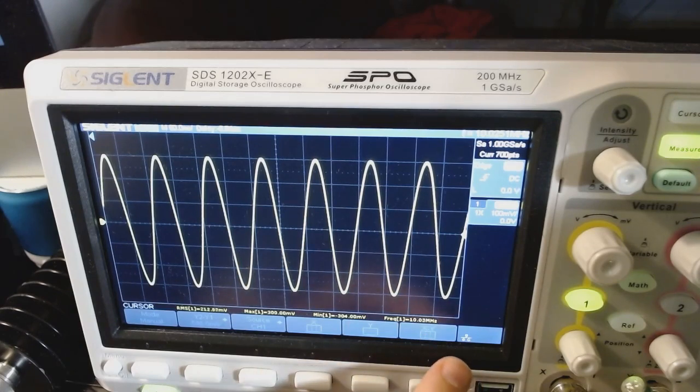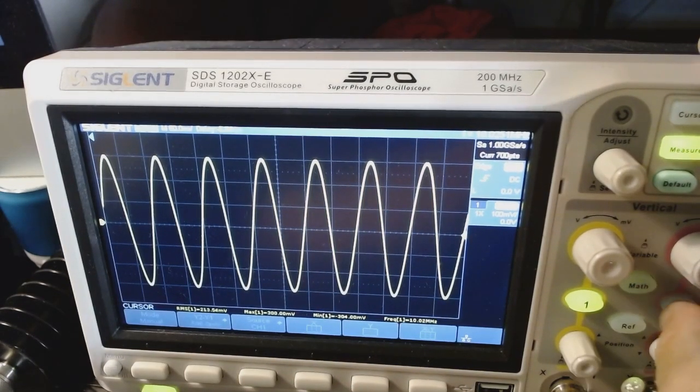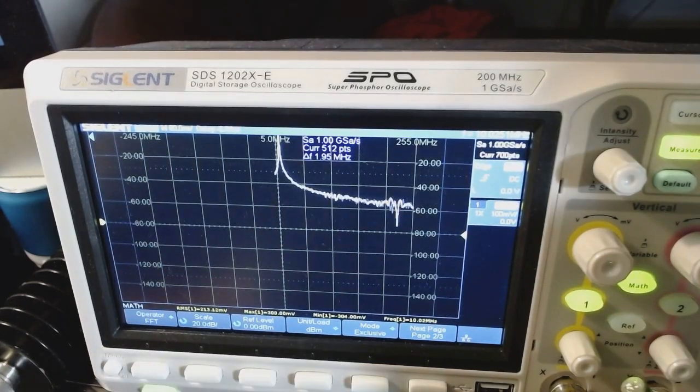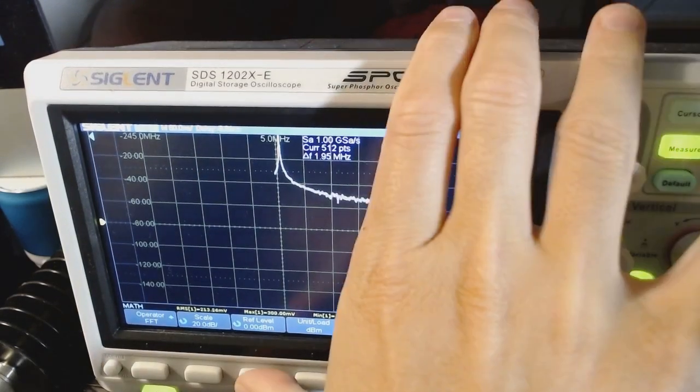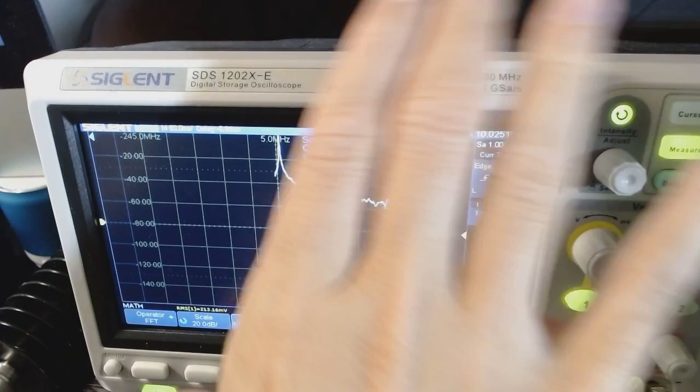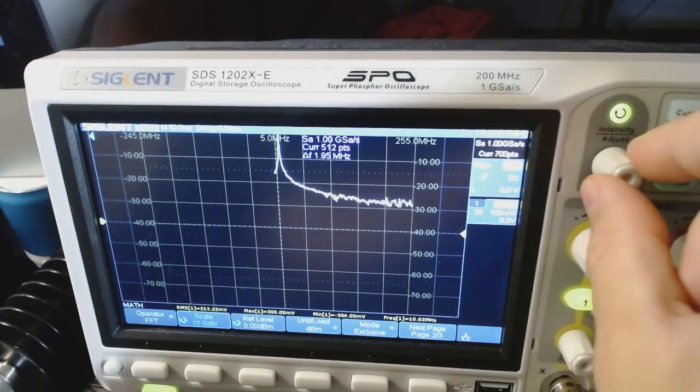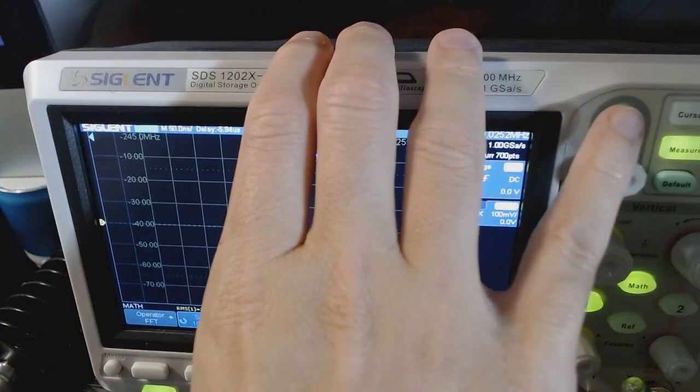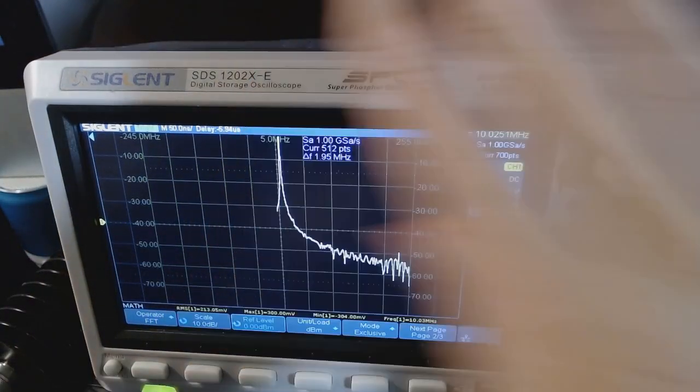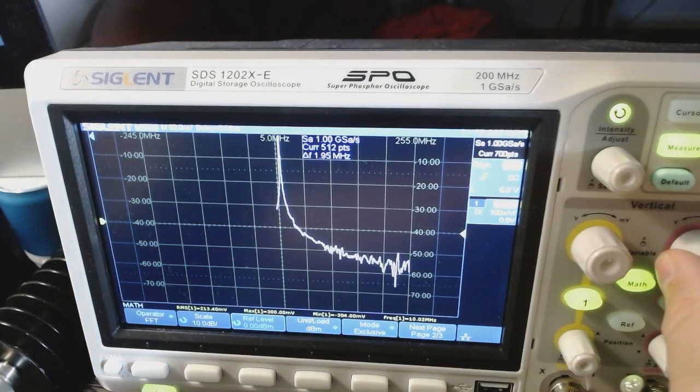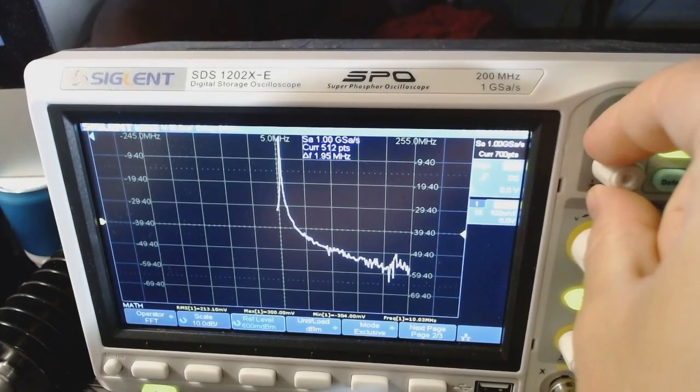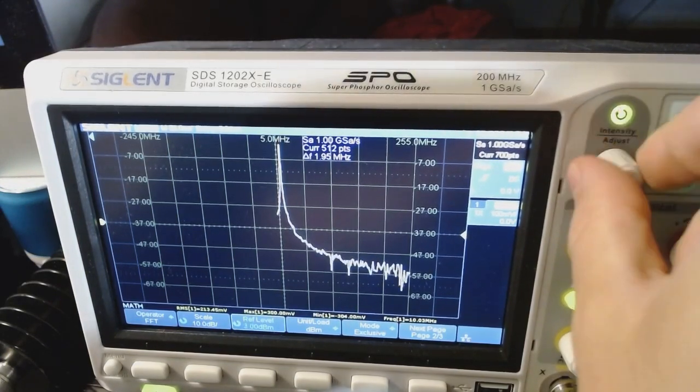But now let me activate the fast Fourier transformation. So it's going to act basically as a spectrum analyzer. So let me actually play a little bit with the parameters. So I'm going to set the scale at 10 dB per division instead of the 20 that we were a second ago. And let me put the reference level at, let's say, 10 dBm.